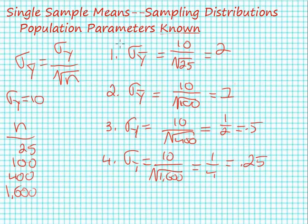So, a couple of things to notice here. First, as our sample size increases, as we go from a sample size of 25 to a sample size of 1,600, our standard errors decrease. And they do this in a very regular pattern.